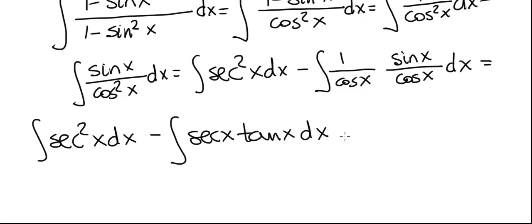And now we can easily integrate both of these. The integral of secant squared of x is tangent x. The integral of secant x tangent x is secant x, and then we add c to that.